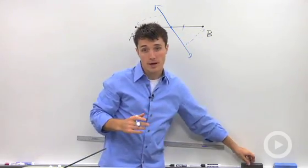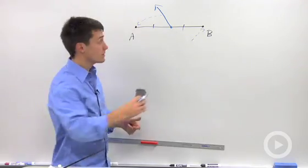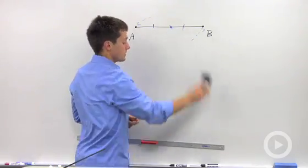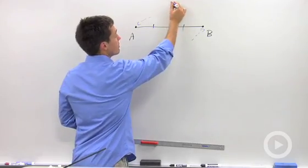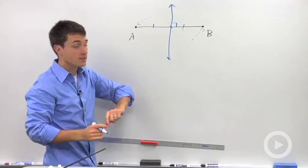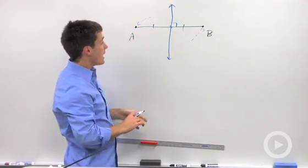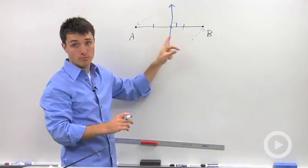So the way that we're going to do that is we're going to use our compass and straightedge, our tools of construction, and we're going to make a perpendicular line. So this line will intersect line segment AB at a 90-degree angle, and it'll divide AB into two congruent pieces.